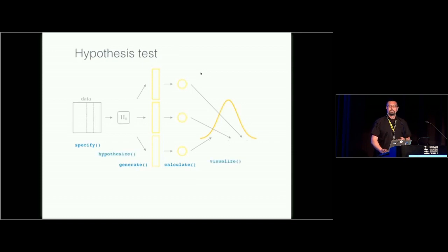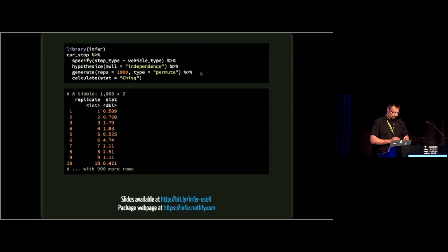That's a hypothesis test. What happens if you want to do a confidence interval? You can kind of think about this. The only thing that really changes here is you're no longer assuming that the null hypothesis is true. So you just drop the hypothesize verb from your pipeline, and then maybe you want to get a standard error out.